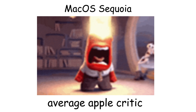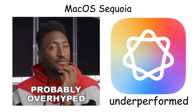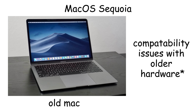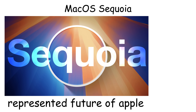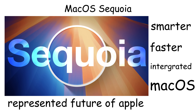However, Sequoia faced criticism. Some users felt AI features were overhyped and underperformed. Others found insufficient significant changes to justify updating. Compatibility issues with older professional software were also concerns. But overall, Sequoia represented Apple's continued efforts toward smarter, faster, and more integrated macOS.